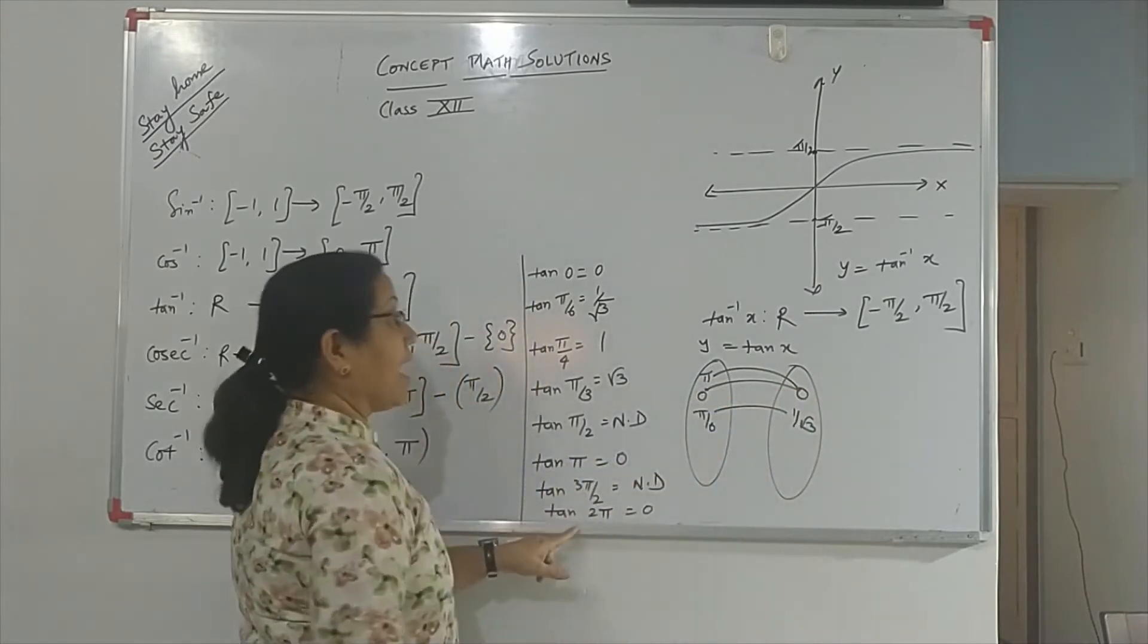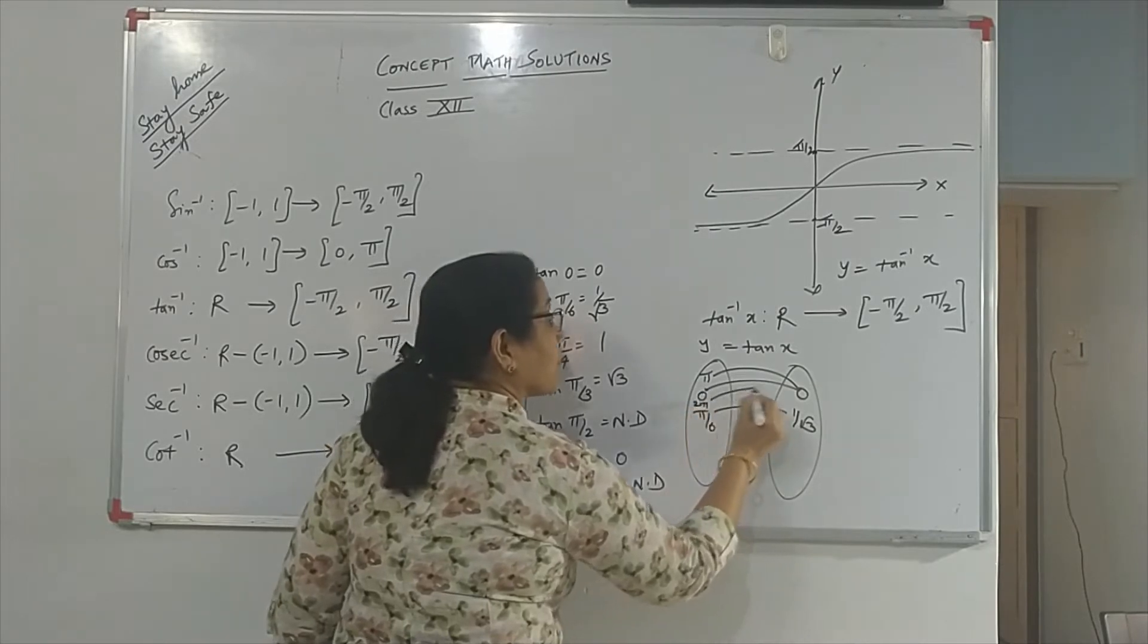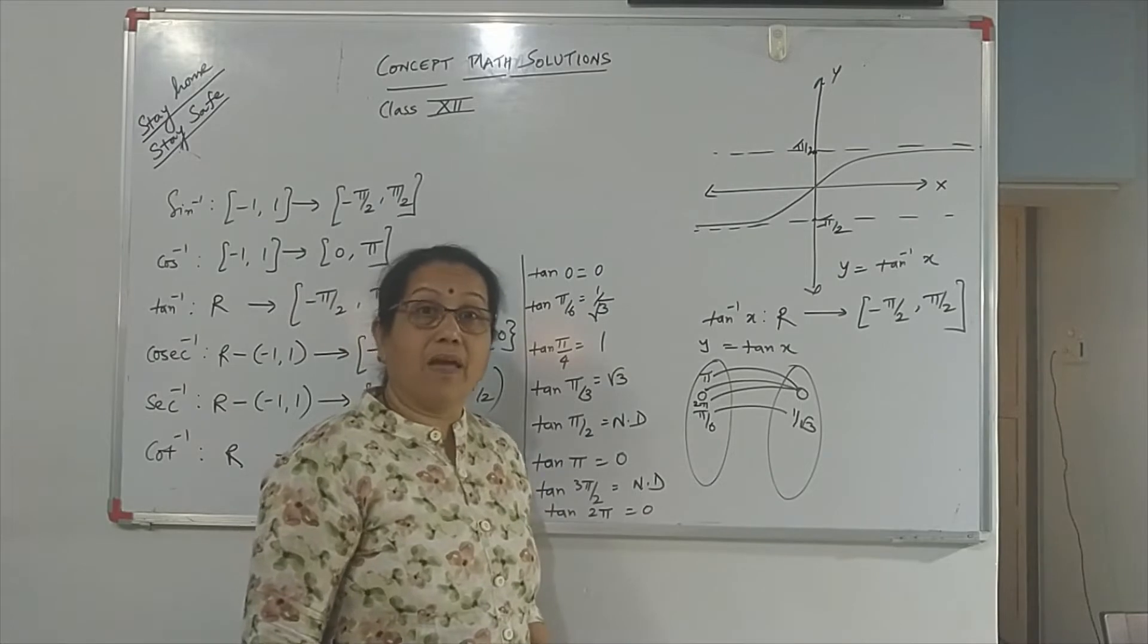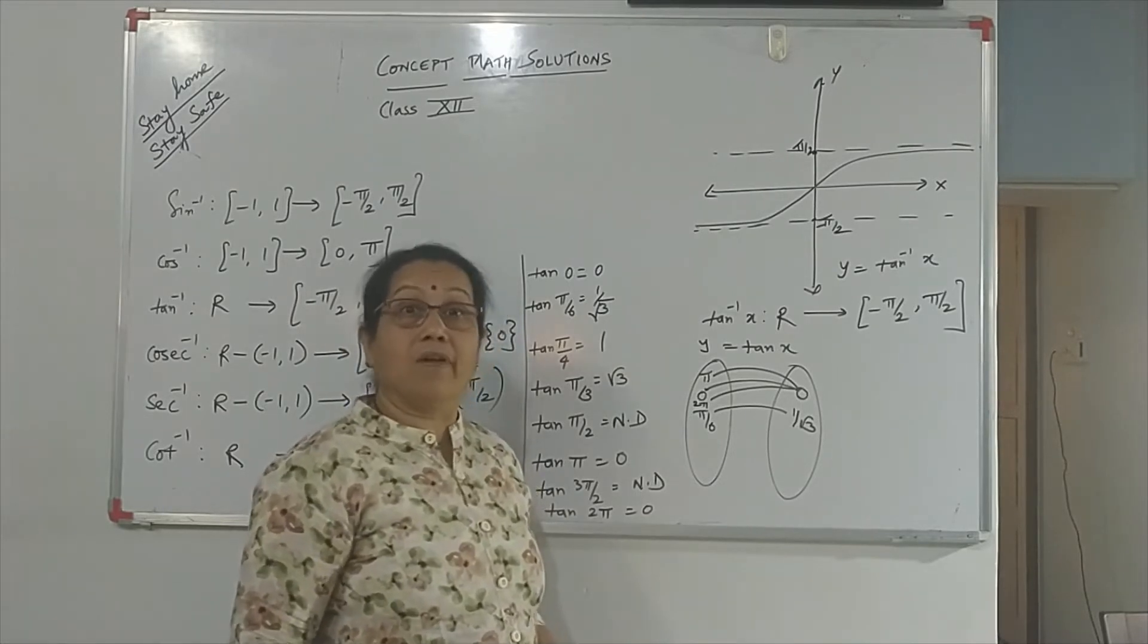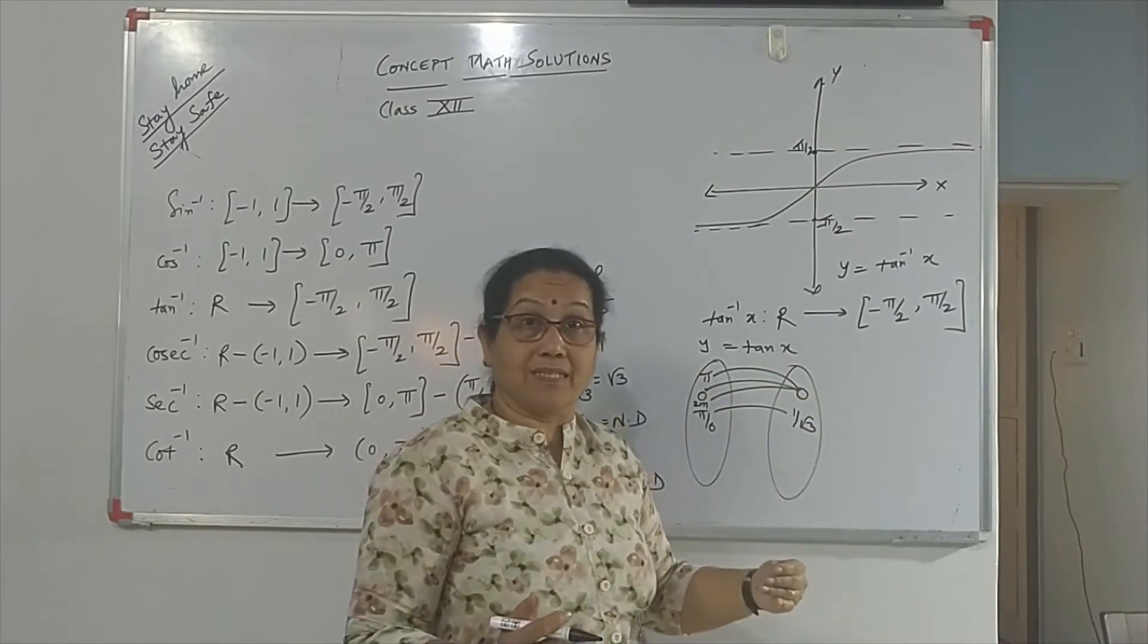Tan 2π is again 0. That is, it is not a 1-1 function. Y = tan x is not a 1-1 function. Now, if it is not a 1-1 function, its inverse won't exist.